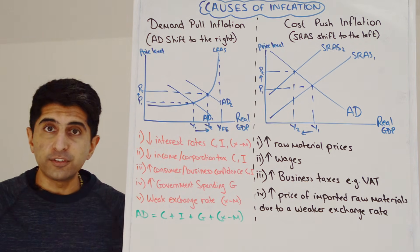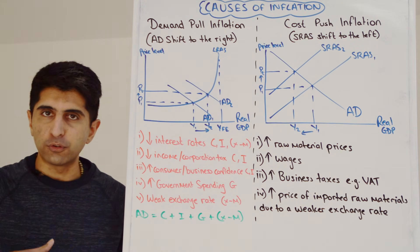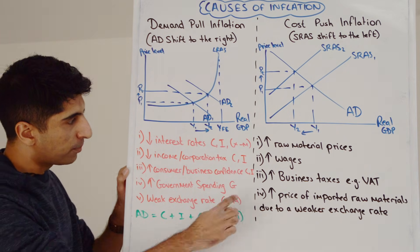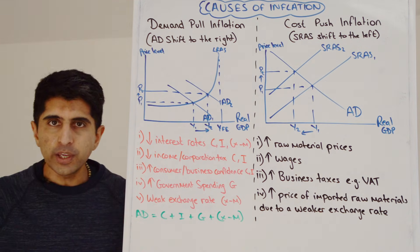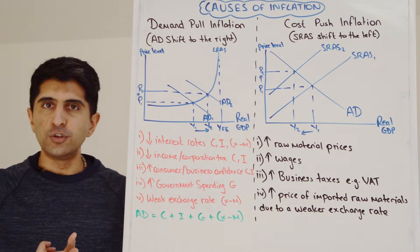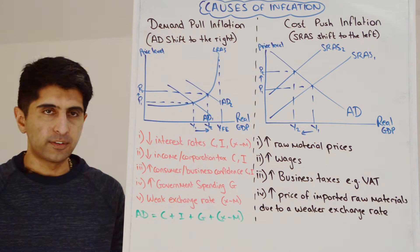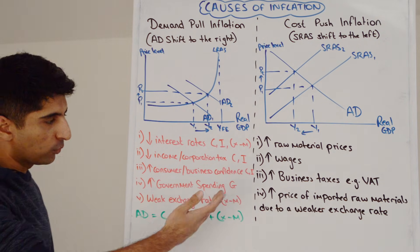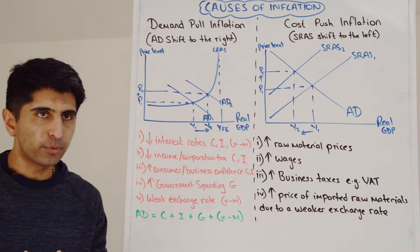Lower income tax increases disposable income for consumers to spend. Lower corporation tax increases retained profits for businesses to invest. High consumer and business confidence will boost C and I respectively. High government spending — that's G in the AD equation. And a weaker exchange rate: remember WIDEC — makes imports dear, exports cheap — reduces demand for imports, increases demand for exports, reduces import expenditure, increases export revenue, and can boost net exports. Remember your AD equation: all these factors link to one or more variables in that equation going up. So there's your demand-pull inflation.